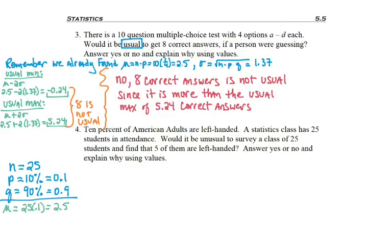First, I find my mean: n times p equals 2.5. So on average, 2.5 students in a class of 25 should be lefties. The standard deviation, the square root of n times p times q, is 1.5.